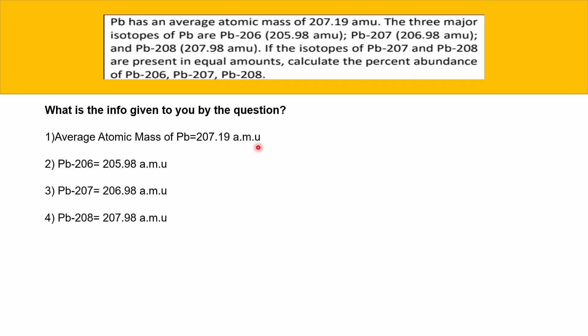The most important information from the question is that the isotopes of Plumbum-207 and Plumbum-208 are present in equal amounts. That means we can safely assume that the isotopic abundance of Plumbum-207 is equal to the isotopic abundance of Plumbum-208.